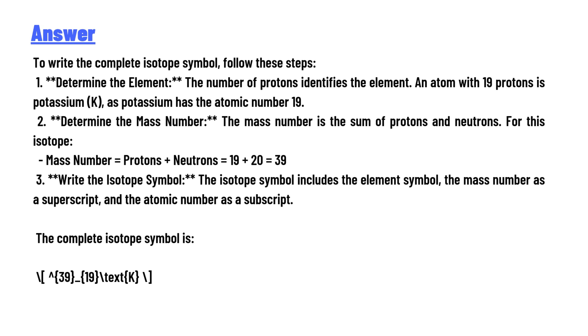Three, write the isotope symbol. The isotope symbol includes the element symbol, the mass number as a superscript, and the atomic number as a subscript. The complete isotope symbol is K-39 over 19.